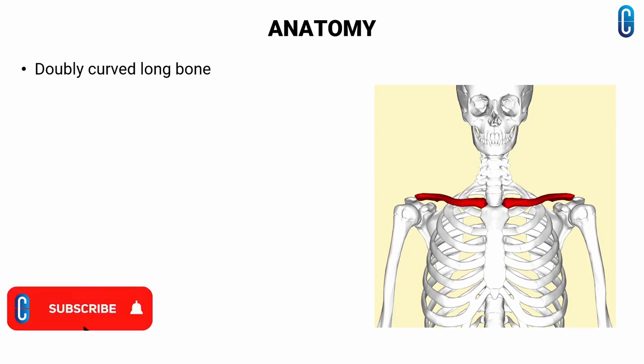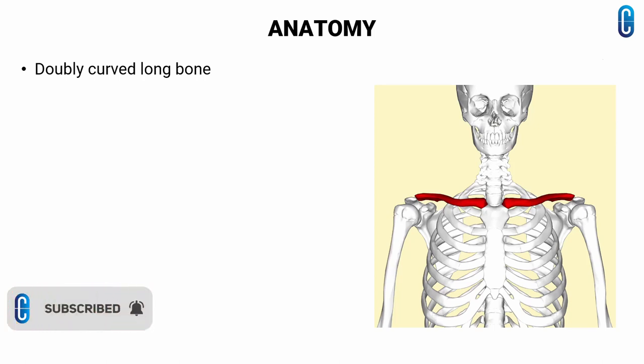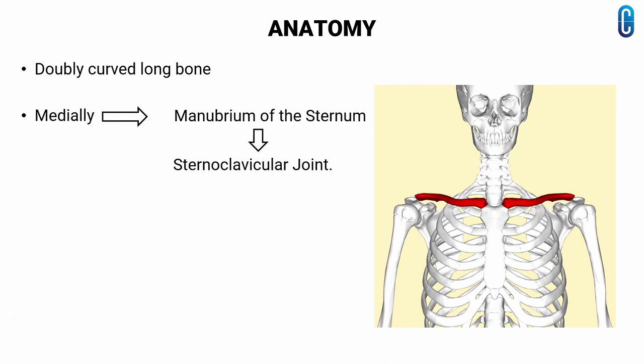The clavicle is a doubly curved long bone that connects the arm to the trunk of the body. Medially, it articulates with the manubrium of the sternum at the sternoclavicular joint.